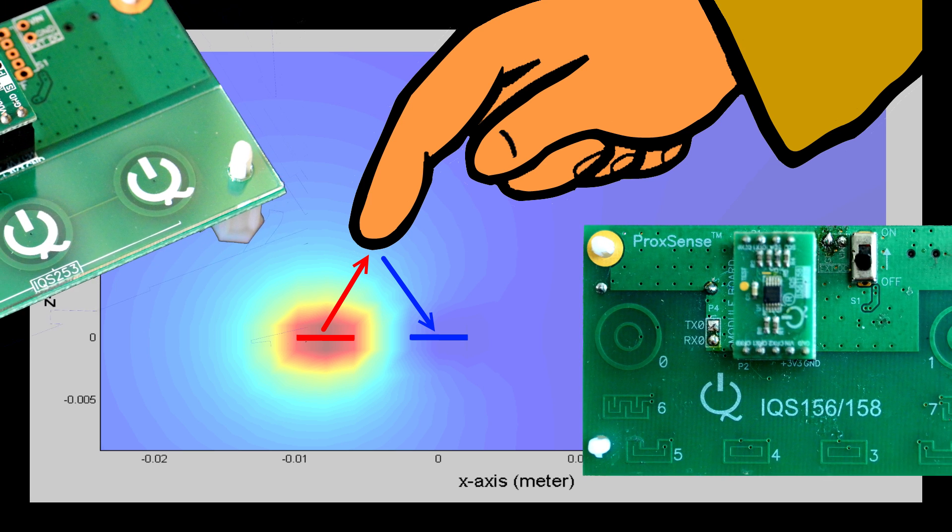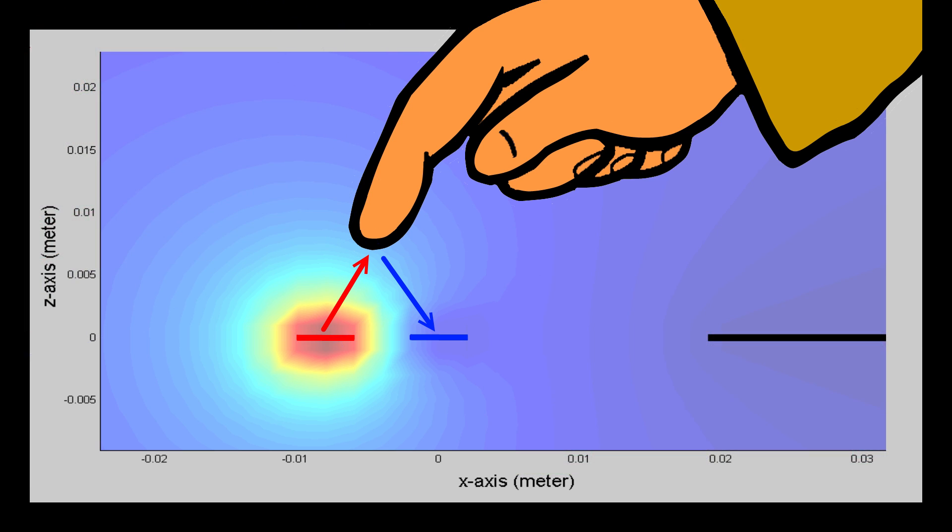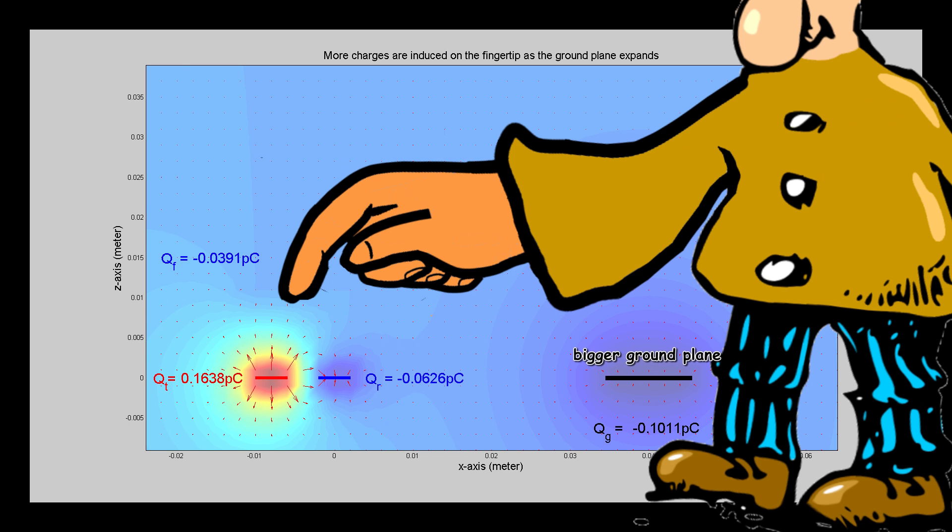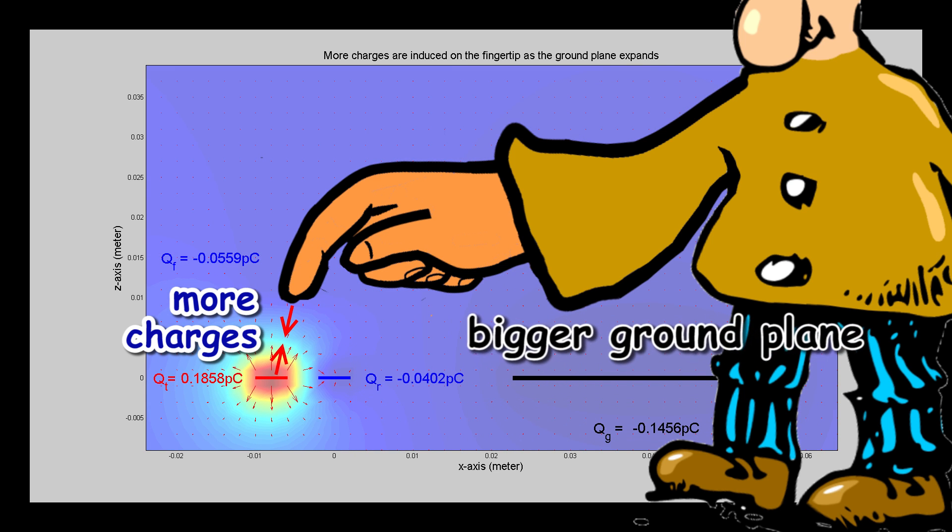So how can we design electrodes with the maximum sensitivity? The sensitivity depends on how much the signal is projected on the fingertip, and the ability of the receiver to pick up the reflected signal. The bigger the ground plane couples to the body, the more the charges are attracted across the transmitter and the fingertip, and therefore the stronger the projected signal.